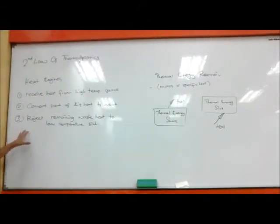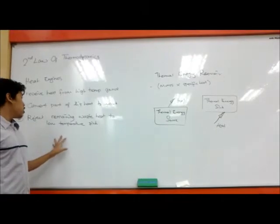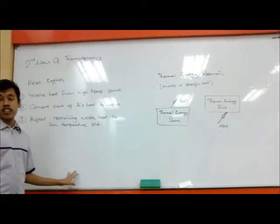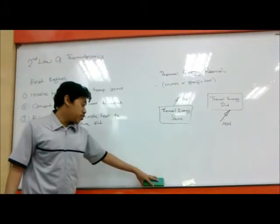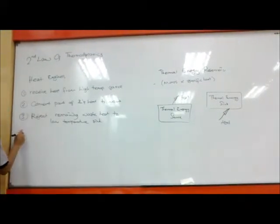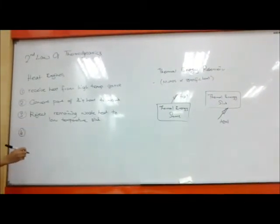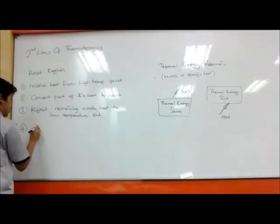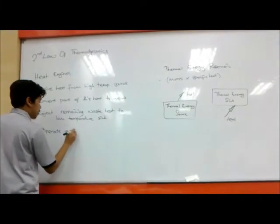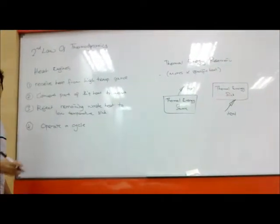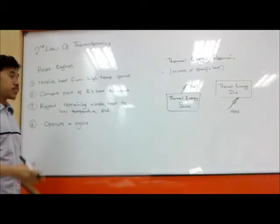The heat engine reject the remaining heat to low temperatures such as rivers, atmosphere, ocean and so on. The final step is operate a cycle. That means the process can be done, the heat is transformed to the work.